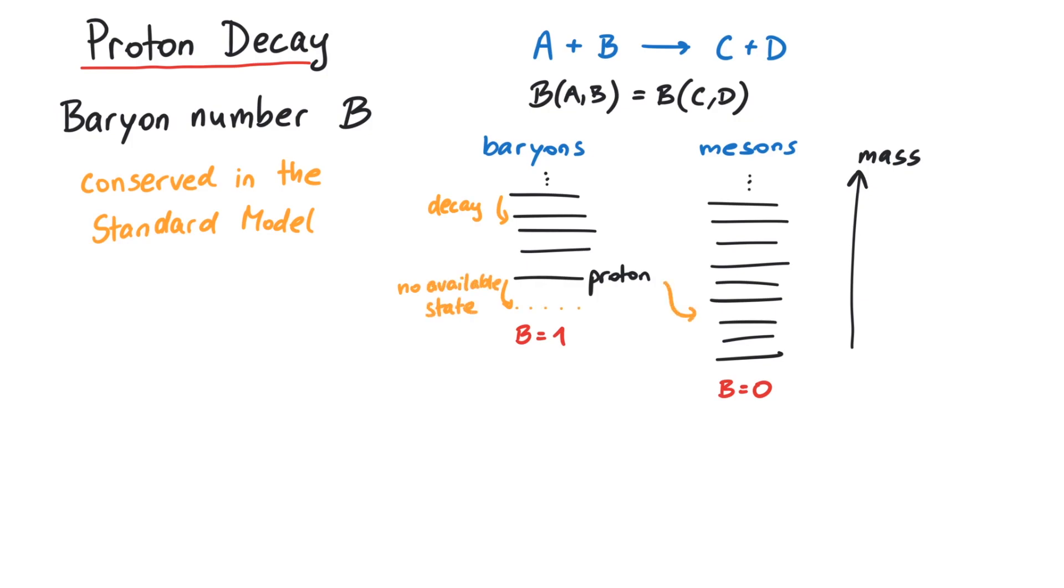There are of course particles that are lighter than the proton, but they are not baryons, that is, their baryon number is zero. So if a proton would decay into one of those particles, the total baryon number would change from one to zero, which is forbidden.